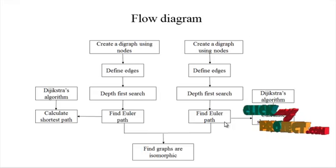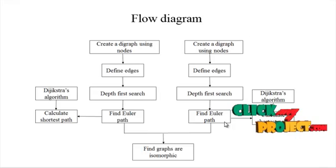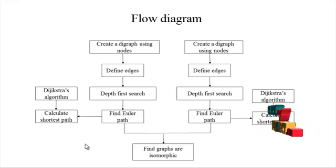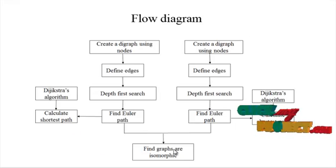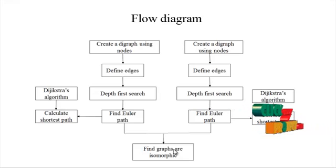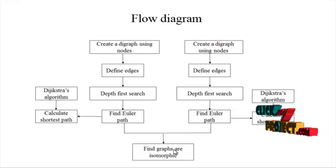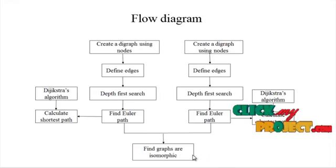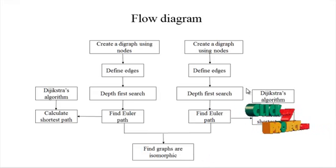Which path is the easiest and shortest path to achieve the target of the process — finding the isomorphic result. Comparing the two graphs: if the graphs are the same, that is isomorphic; if they are different graphs, that is non-isomorphic. These are the overall process of the program.